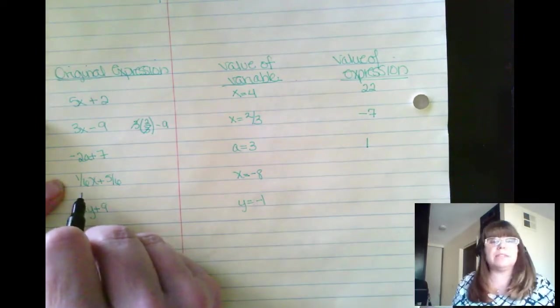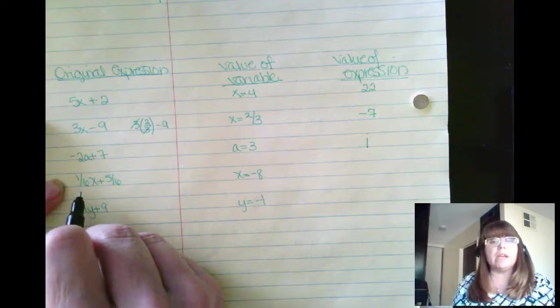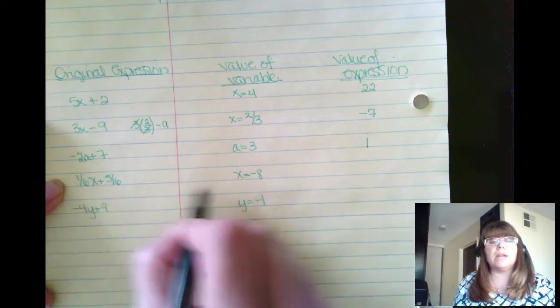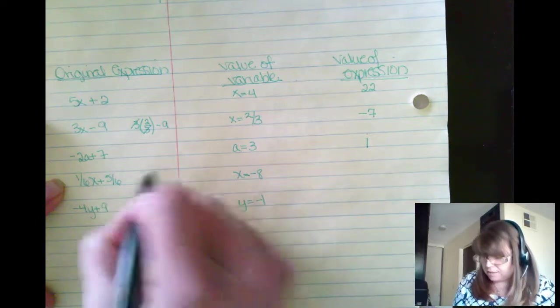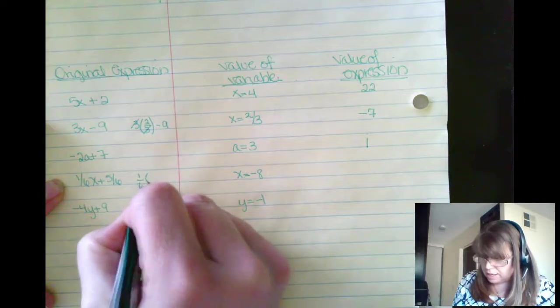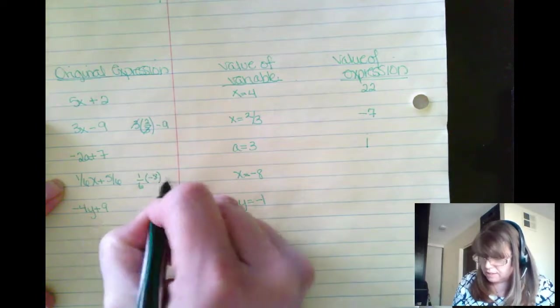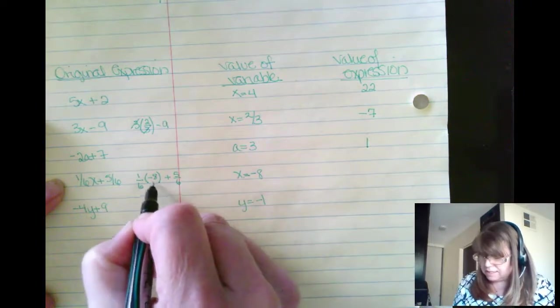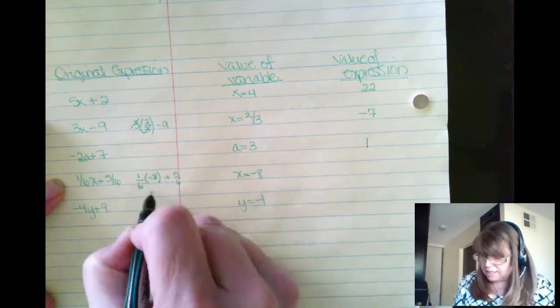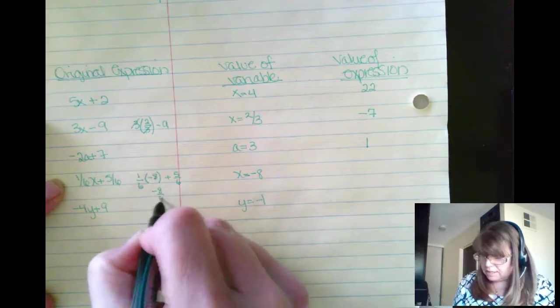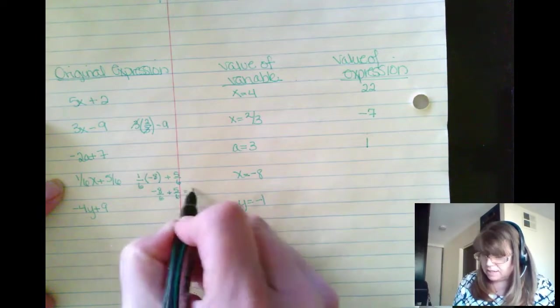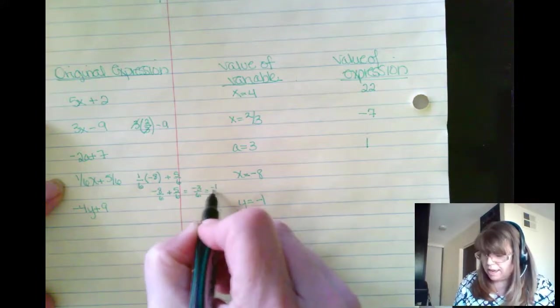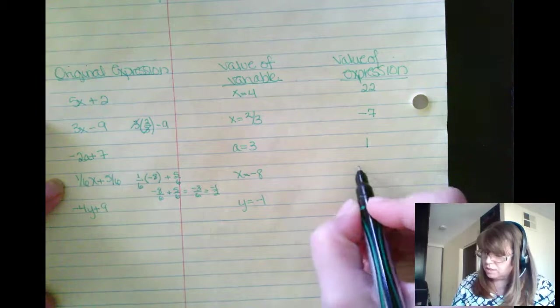Now here's one. It looks a little difficult, but we'll work through it. 1 sixth x plus 5 sixth. What happens when x is negative 8? 1 sixth times negative 8 plus 5 sixth. But negative 8 sixth because 1 times 8 is just negative 8 sixth plus 5 sixth is a negative 3 sixth. But that can be reduced down to negative 1 half. So our solution, negative 1 half.